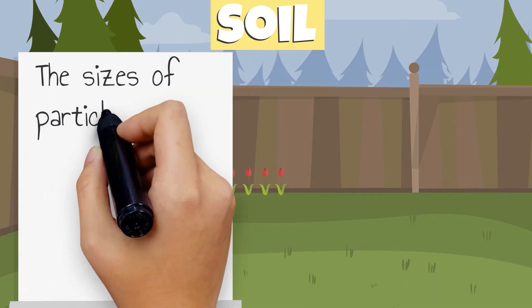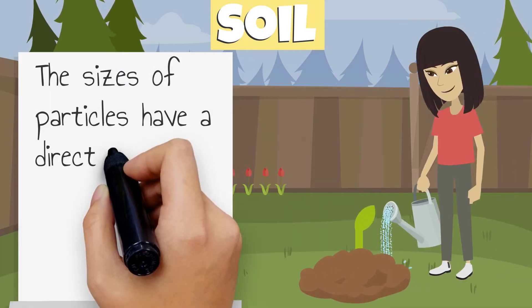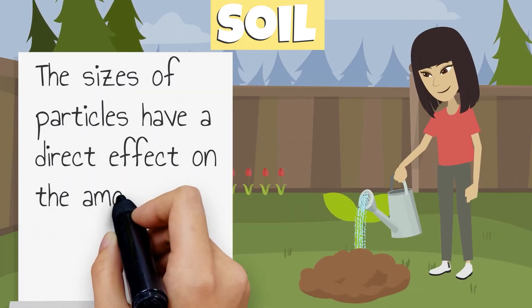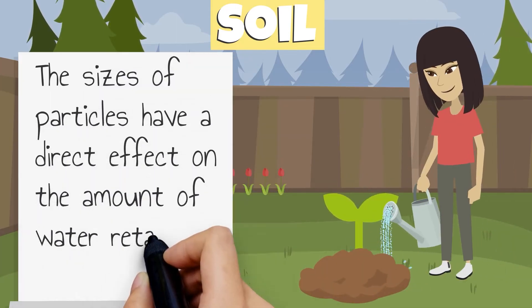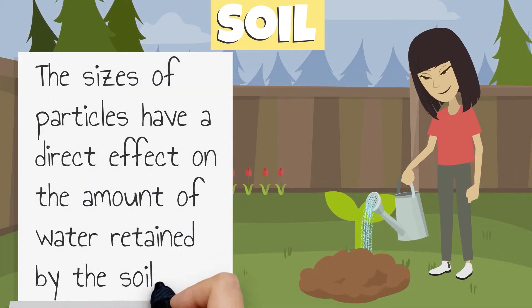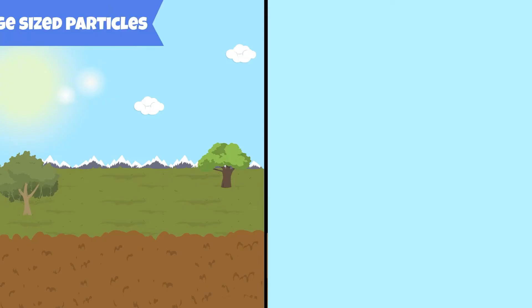The sizes of particles have a direct effect on the amount of water retained by the soil. The larger the size of the particles, the less water retains.